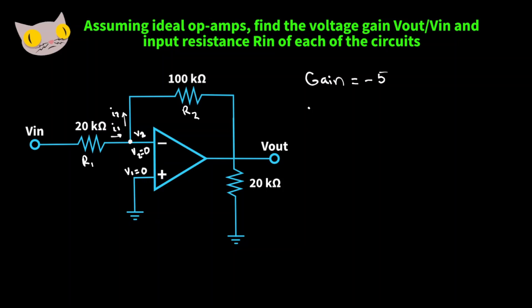And for our input resistance, just like in the first problem, we get 20,000 ohms. Let's move on to the next one.